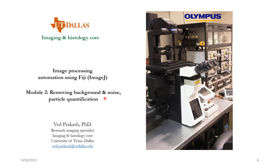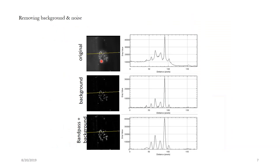Hello, welcome to module number two of image processing automation using Fiji or ImageJ. In this module we'll be discussing how to remove background noise and how to do particle quantification. Let's take an example of this image of a cell. As we can see, if I draw a line profile here, there is a non-homogeneous background — there's a lot of background here compared to here, and there's some bit of noise as well.